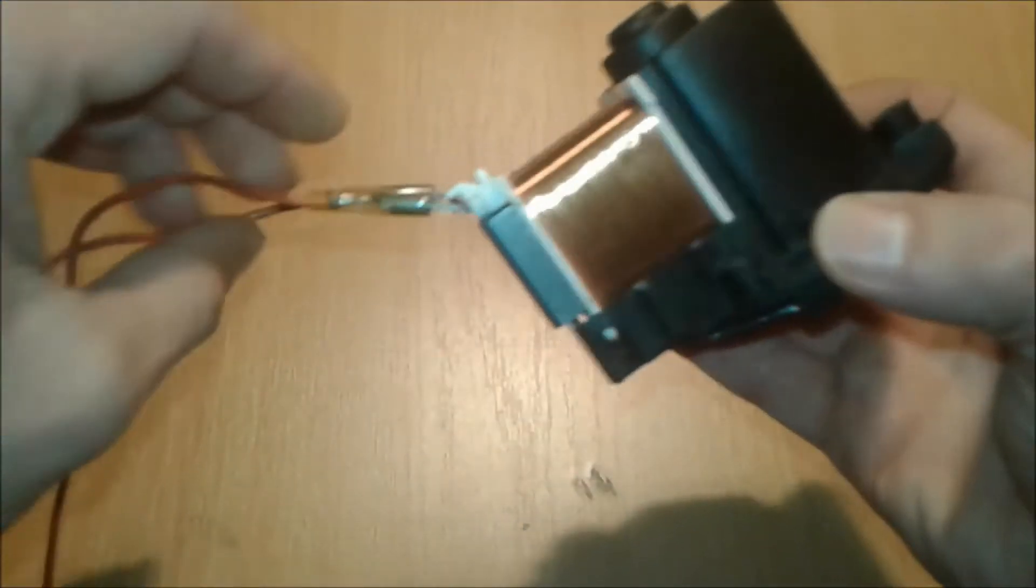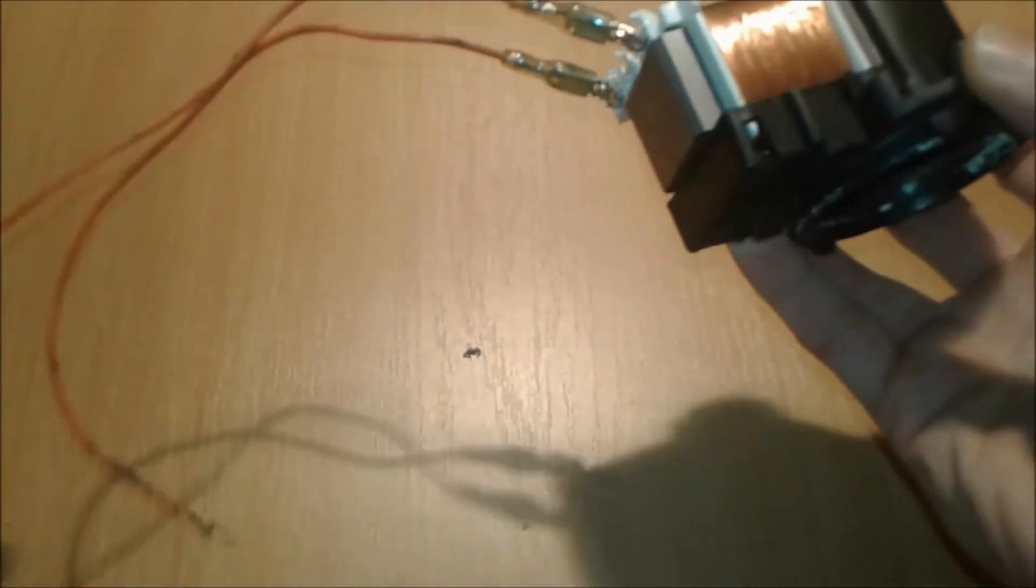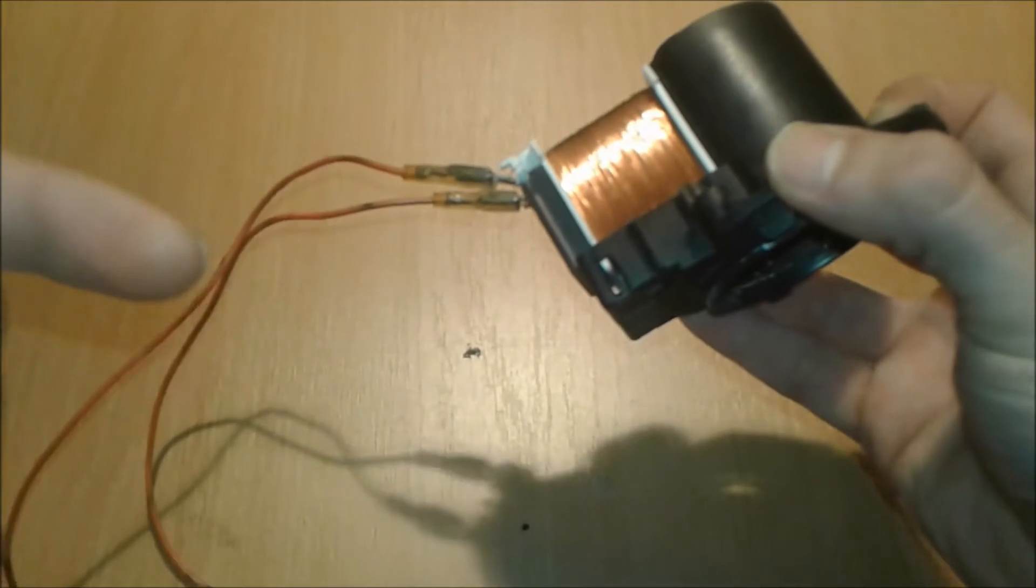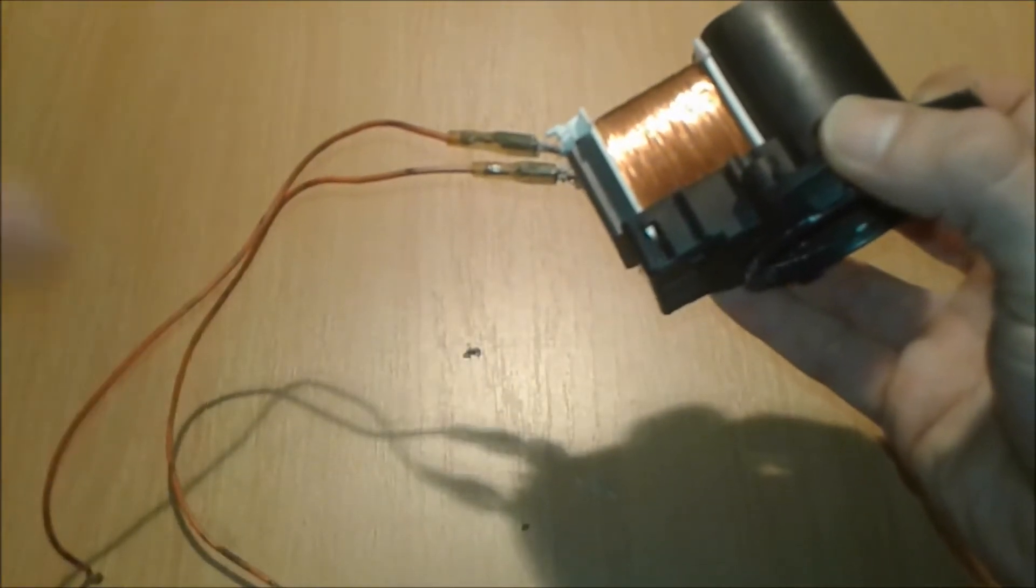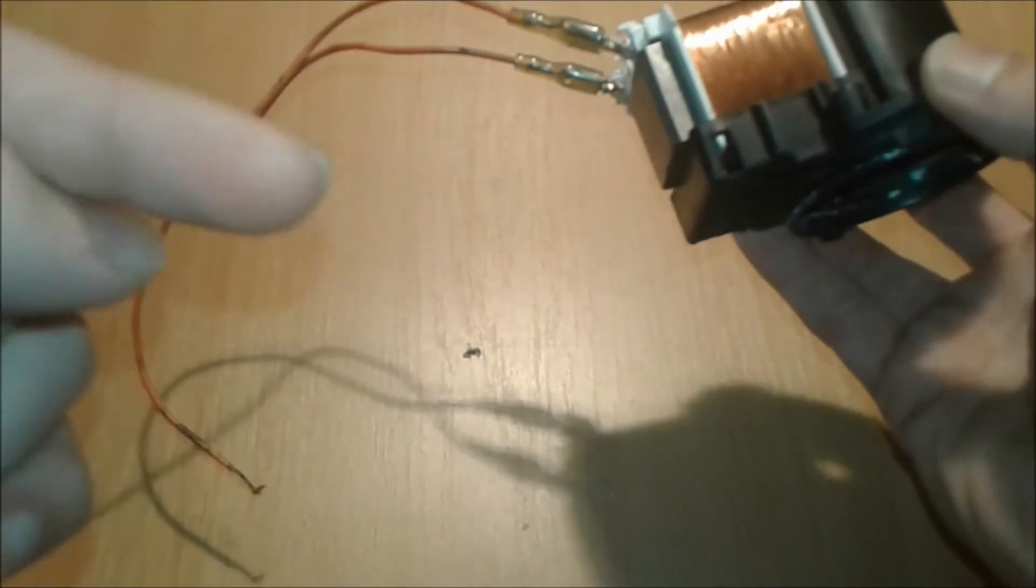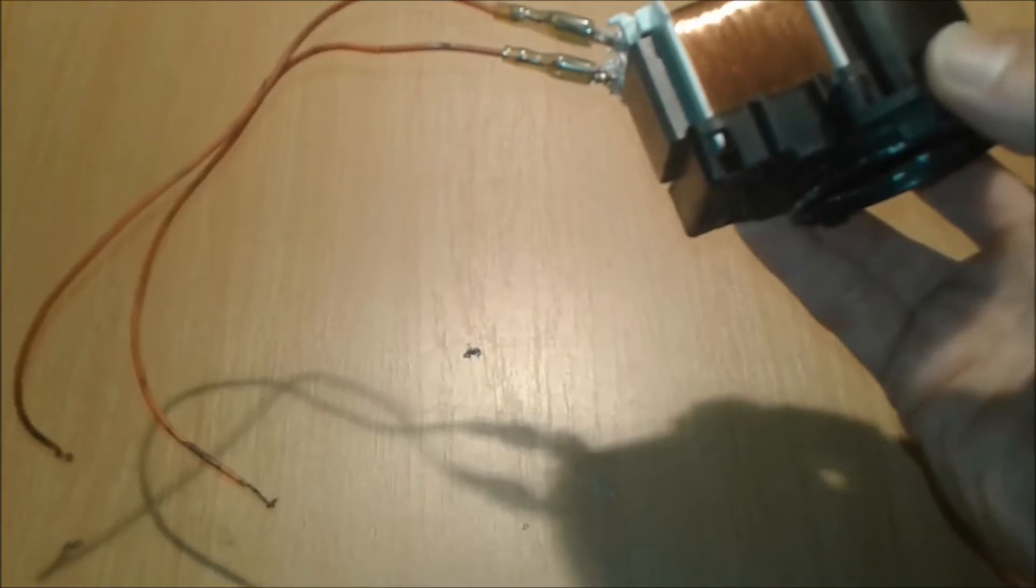we're going to need a washing machine pump. You can find them everywhere, they're kind of cheap, or if you find a washing machine on the side of the road, take it - there are lots of interesting stuff inside that you can reuse.